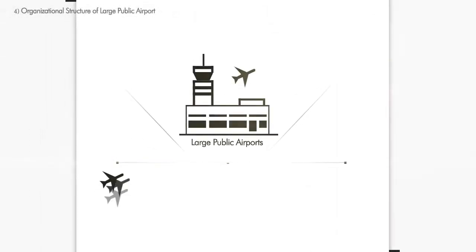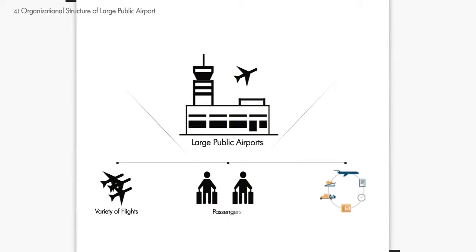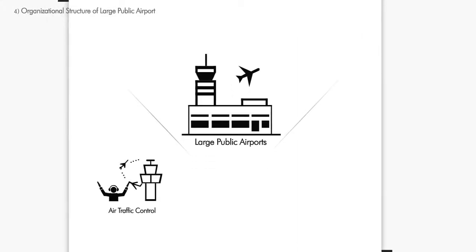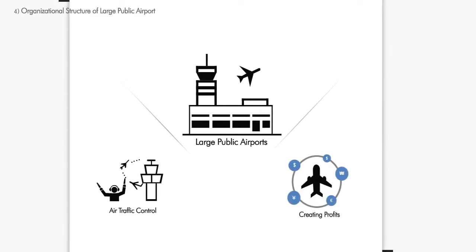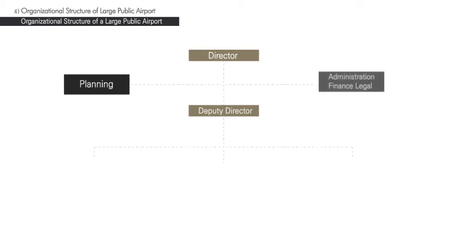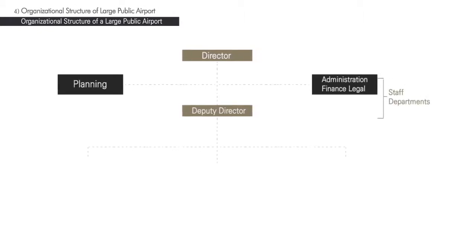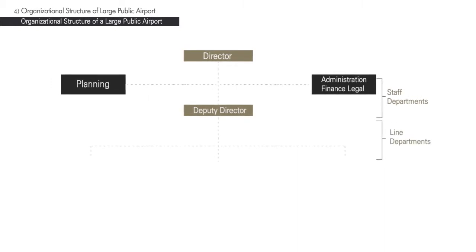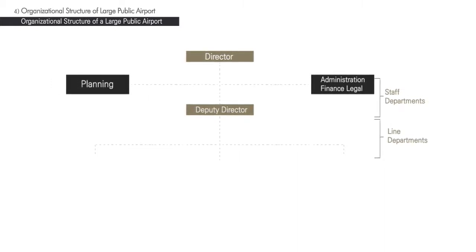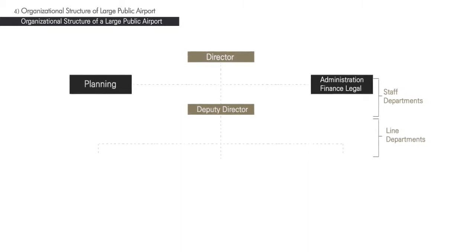Large public airports that serve a variety of flights, passengers, and cargo have very complicated facilities and equipment. These airports must be able to handle air traffic safely and efficiently. At the same time, it is important for airports to generate good financial results through commercial activities at terminal buildings. To accomplish such tasks, a commercial airport has to have a clear structure of organization, including staff function as well as line function. This figure shows a general concept of the organization structure of a large public airport.